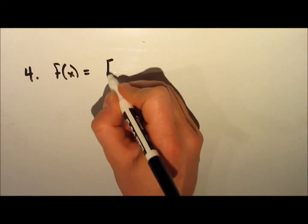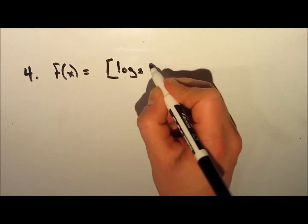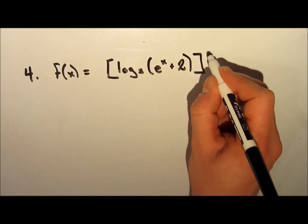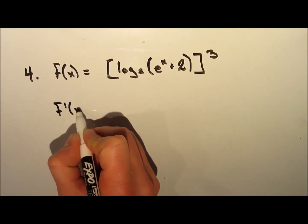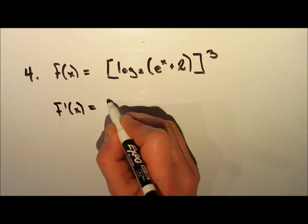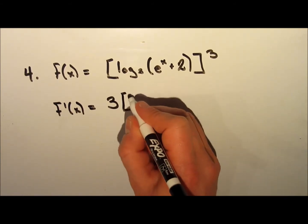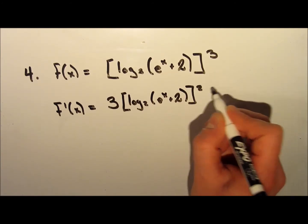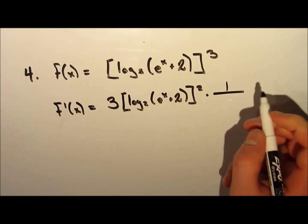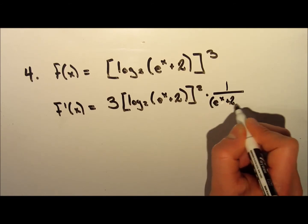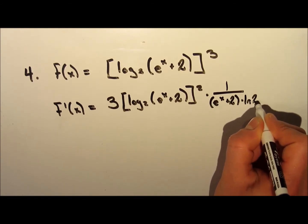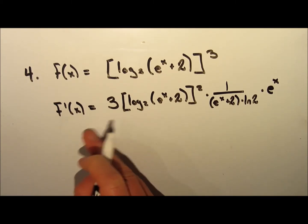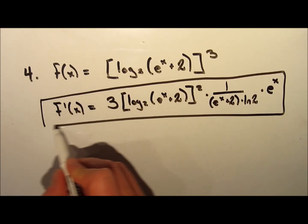For our final example, we take the derivative of f(x) equals log base 2 of (e to the exponent x plus 2), all raised to the exponent 3. We follow the rules: first apply the power rule, bringing the exponent 3 out front, multiplying everything inside, and subtracting 1 from the exponent to get 2. Then we take the derivative of the entire inside: the derivative of log base 2 of (e to the x plus 2) gives us 1 over (e to the x plus 2) times ln 2, multiplied by the derivative of the bracket, which is e to the x.